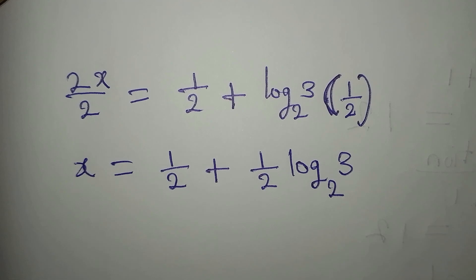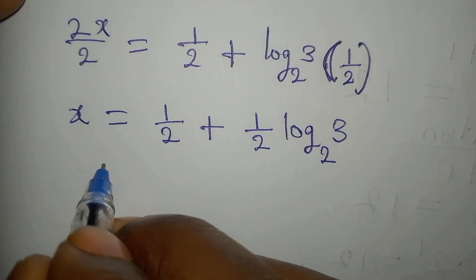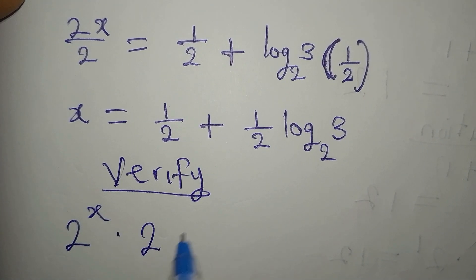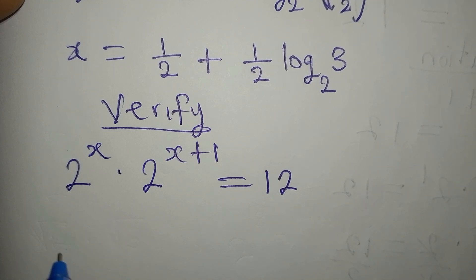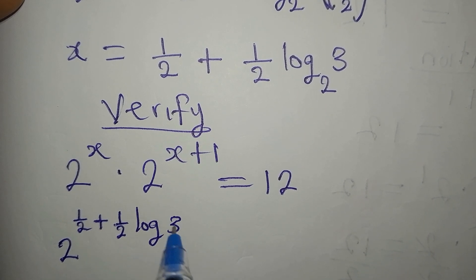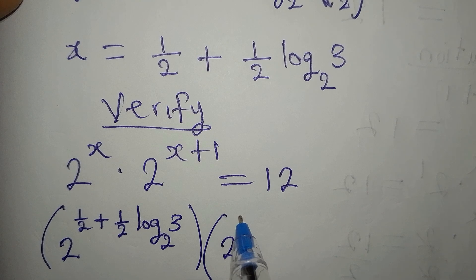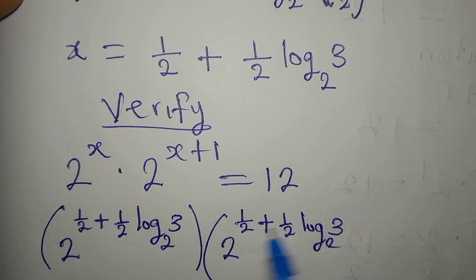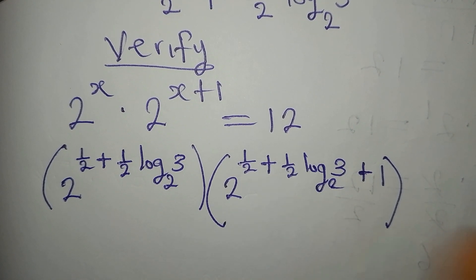Let us verify our work. We have 2 to the power of x times 2 to the power of x plus 1 equals 12. Our x is 1 over 2 plus 1 over 2 log 3 to base 2. Substituting, we get 2 to that power multiplied by 2 to the same expression plus 1. We are checking whether this equals 12.